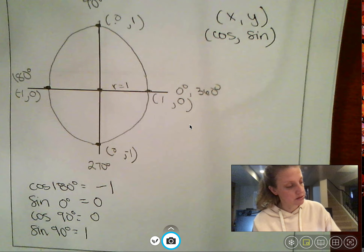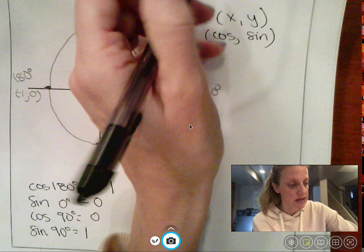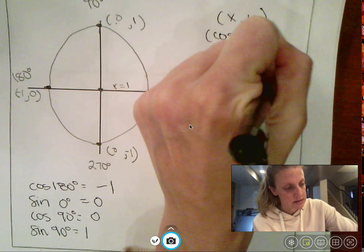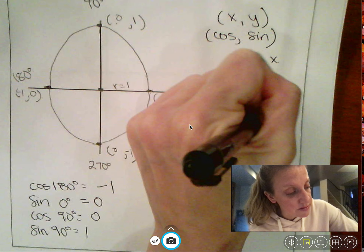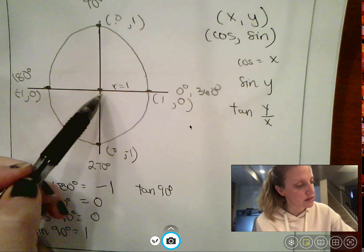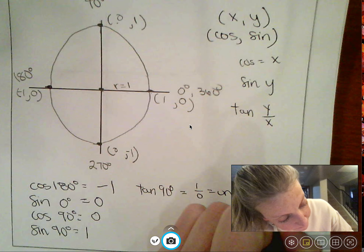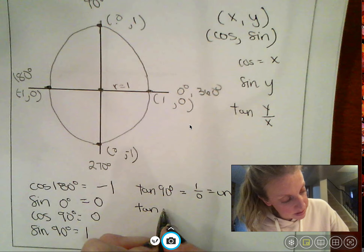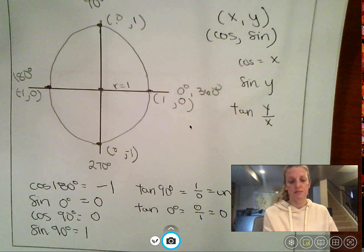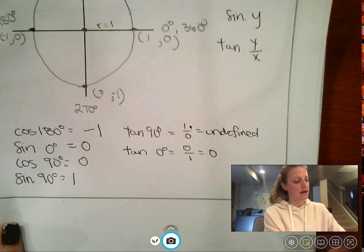What about tangent? We've said the x value is cosine and the y value is sine, so tangent is y divided by x — it's a fraction. What if I asked for the tangent of 90 degrees? Up at 90 degrees, y over x would be 1 over 0, so the answer is undefined. And the tangent of 0 degrees? At 0 degrees, y over x is 0 over 1, which is just zero.